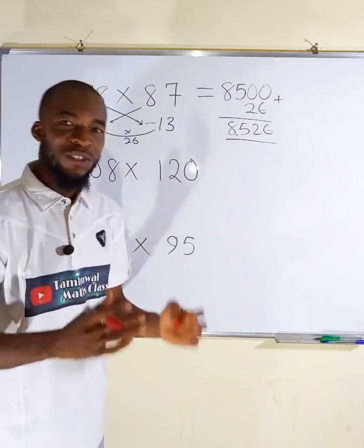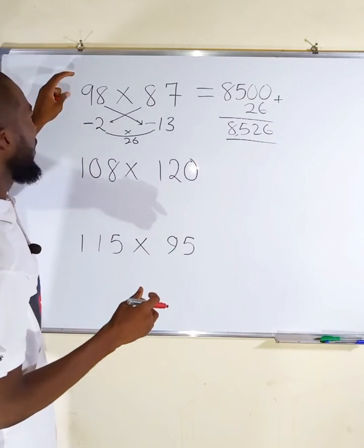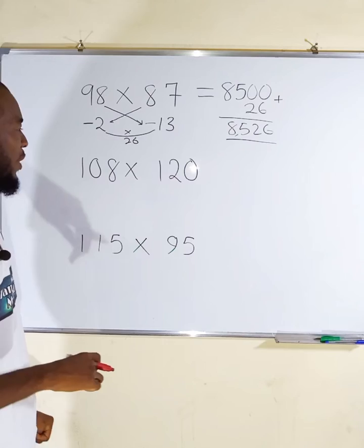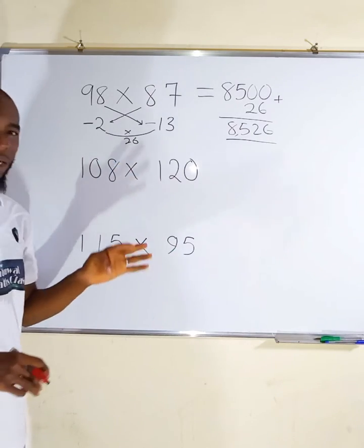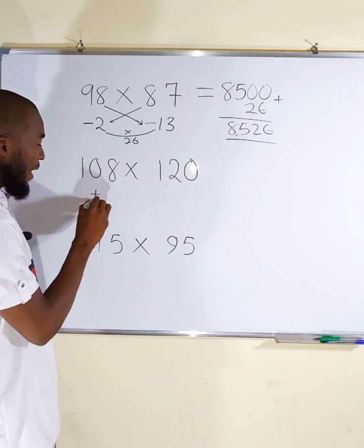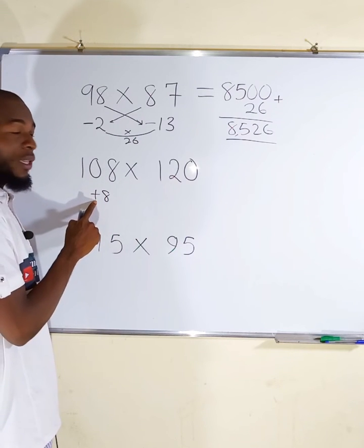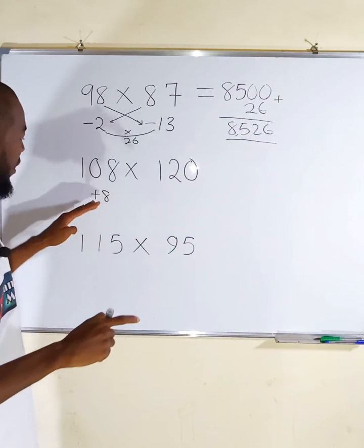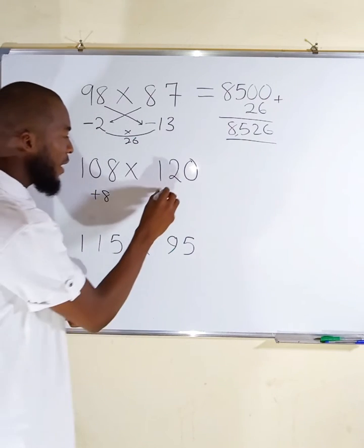Therefore 8526 is the result after multiplying 98 by 87. Now let us take the next one. These two numbers are greater than 100. This one is greater by 8, this is why we have plus here. This one is 8 more than 100 while this number is 20 more than 100.